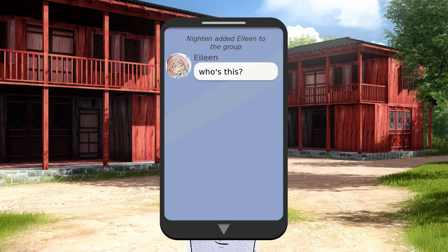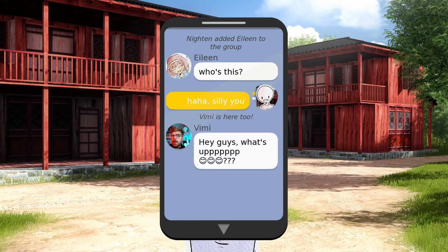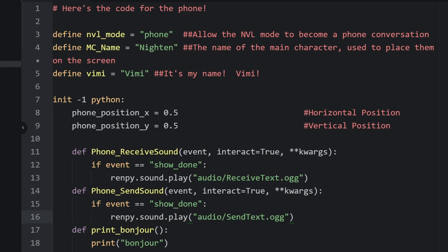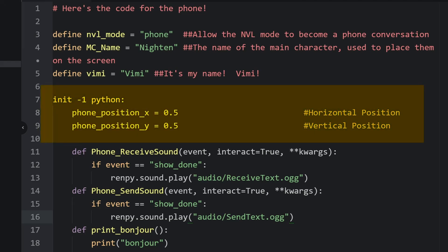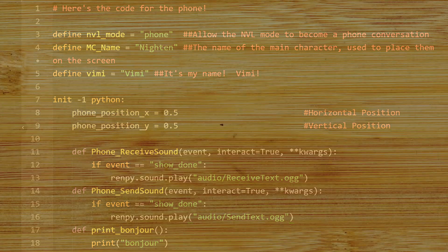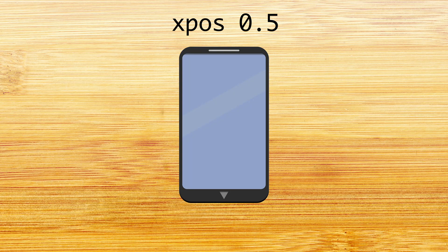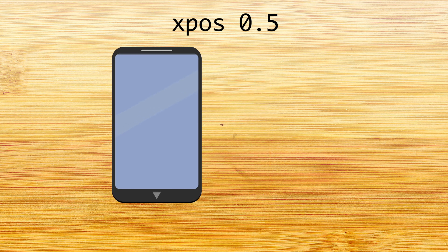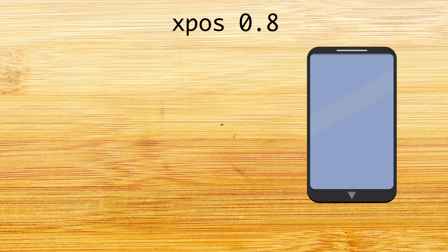And here we can see it's working like a charm. You may have even noticed the phone is centered too. Right at the top of phone texting.rpy, you can see the phone positions for x and y. If you want the phone to be in the center of the screen, we'll set the x position to 0.5. If we want it on the left, we can set it to 0.3, and on the right at 0.8. Feel free to nudge this wherever you need it.